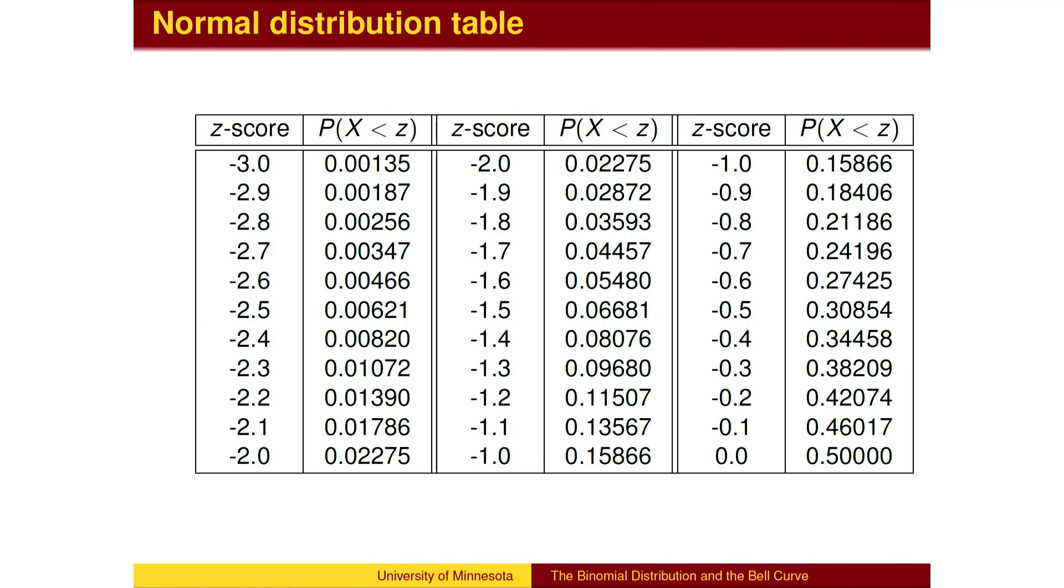Many sources have tables for the standard normal distribution. To each z-score is associated the probability that a randomly chosen member of the population is below that z-score. For example, 2.275% of the population is below a z-score of negative 2. As we would expect, the fraction of the population that is below z equals 0, which is the fraction of the population below average, is a half.